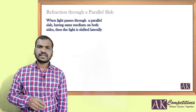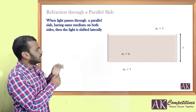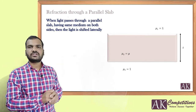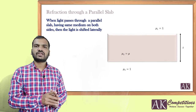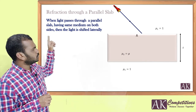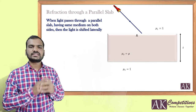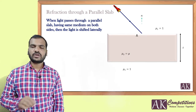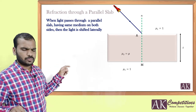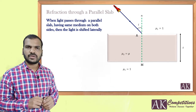To understand that, let us take a glass slab with thickness t. Above is air with refractive index 1, the slab medium has refractive index mu, and below is again air with refractive index 1. Now let us take a torch light incidenting at point A. There you take a normal, and the incident ray makes an angle of I.